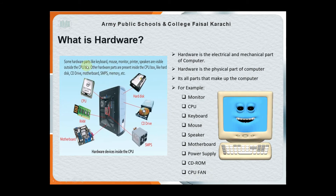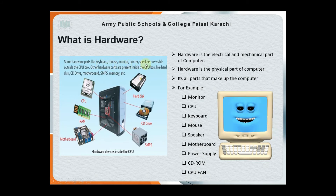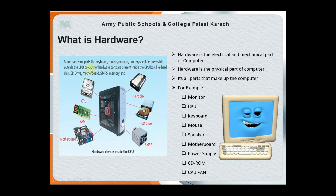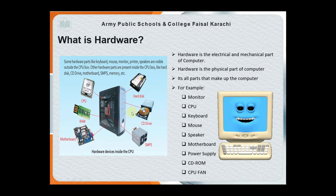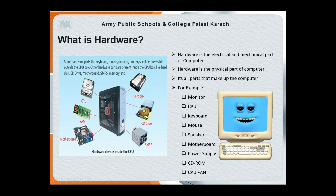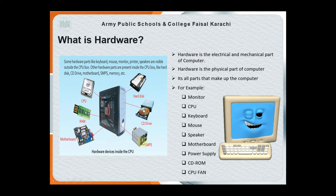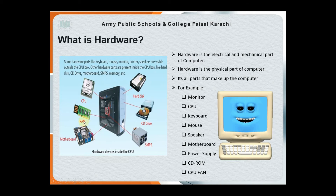Some hardware parts like keyboard, mouse, monitor, printer, and speaker are visible outside the CPU box. Other hardware parts are present inside the CPU box — these all parts are inside the CPU — such as hard disk, CD drive, motherboard, SMPS, and memory.